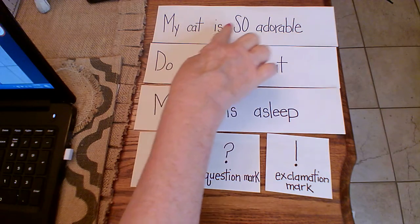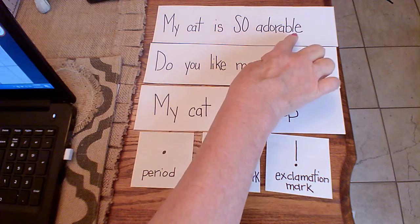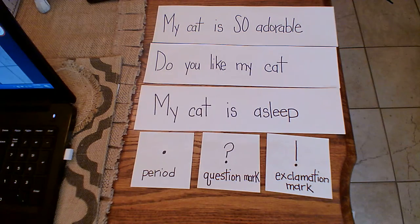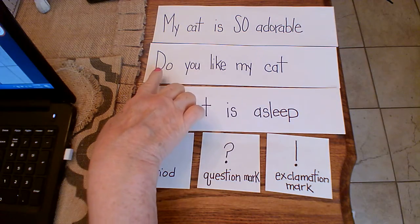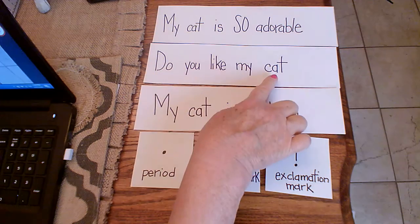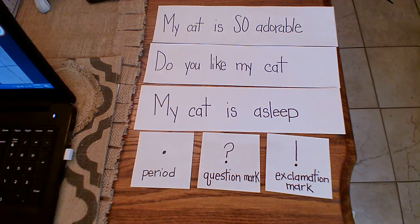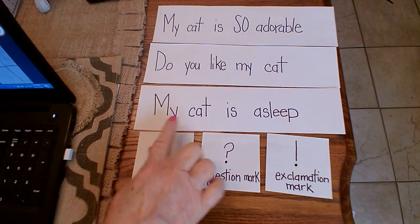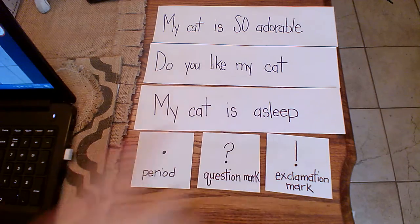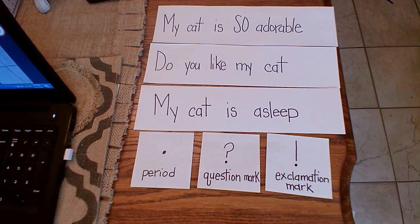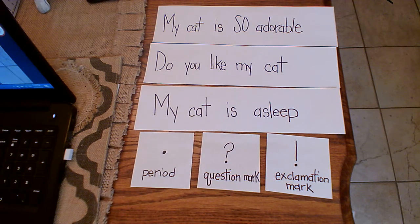My cat is so adorable. The second one says, do you like my cat? And the bottom one says, my cat is asleep. All right. Think in your mind where you think each of the punctuation marks go with each sentence, and then I will see if you got it right.